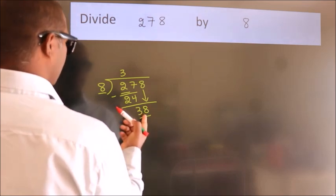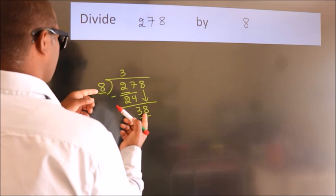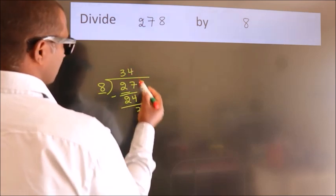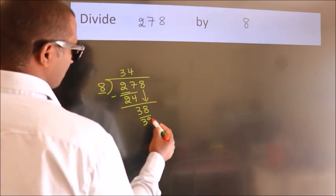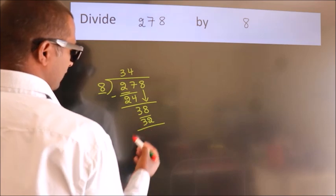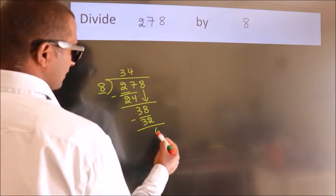A number close to 38 in the 8 table is 8 threes, 32. Now we subtract. We get 6.